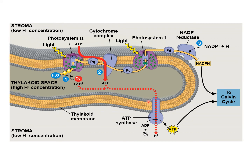Even the membrane here — you should understand it's a thylakoid membrane. We're in the interior of the thylakoid space; this is the stroma, which is the cytosol of the chloroplast. You should be able to explain every little thing in this picture: we're receiving electrons for electron transport, donating electrons into photosystem 1 (P700), accepting electrons from photosystem 1, and handing them off to NADP reductase to make NADPH.